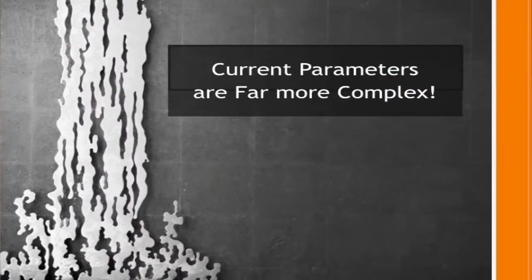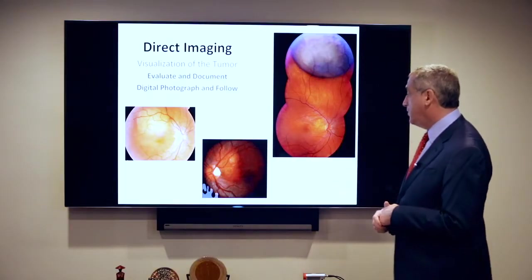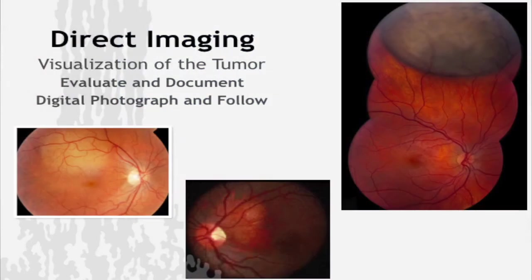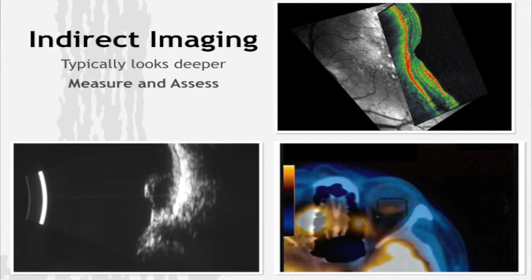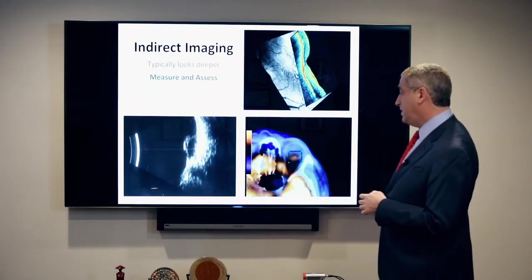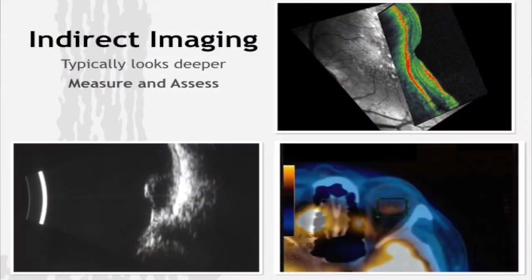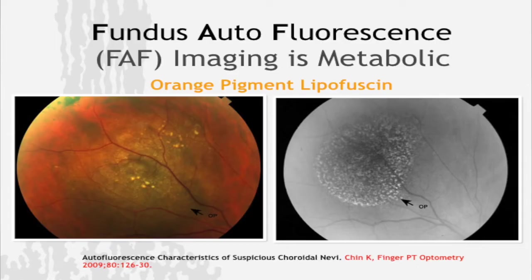Current parameters and methods thankfully are far more complex. We have more direct imaging, digital imaging with instant photographs. We can look at tumors today and compare them to three months ago instantly. We have indirect imaging like OCT imaging to look inside or under the retina, better ultrasound machines, and physiologic imaging like PET scans, PET-CT scans, and fundus autofluorescent imaging.